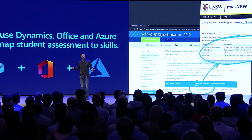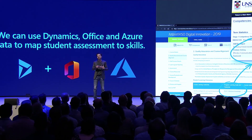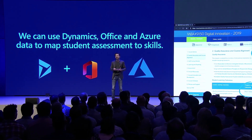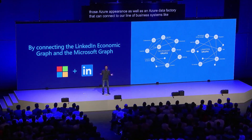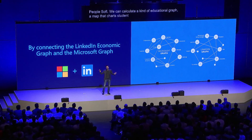What happens next? We've got all of this information within a course — assessments mapped to learning outcomes — and we can log all of that in Dynamics and pull it into a system. We've got all of the marks coming out of Office, and we've got Azure apps as well as an Azure Data Factory that can connect to our line-of-business systems like PeopleSoft. We can calculate a kind of educational graph: a map that charts a student's curriculum through to all of the various skills they're developing throughout the program.